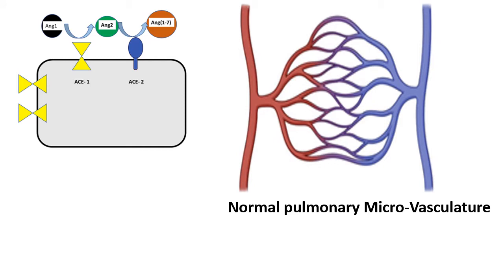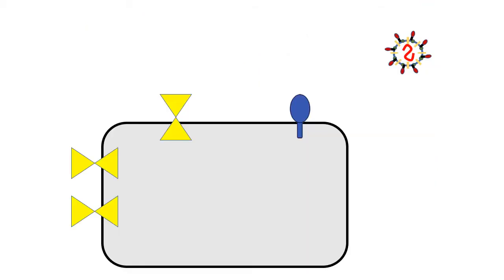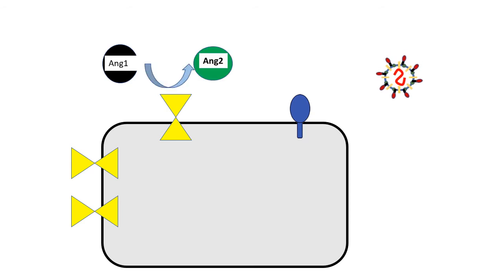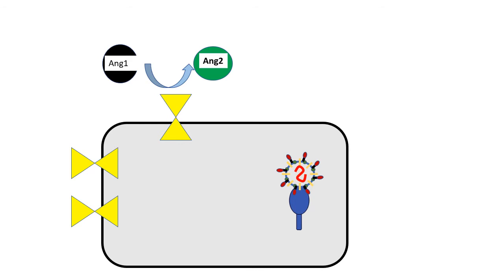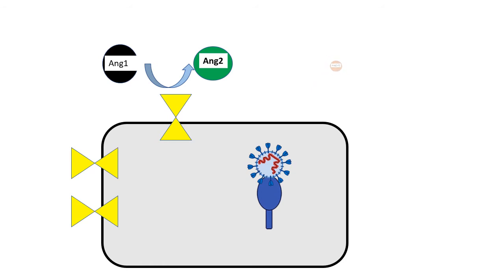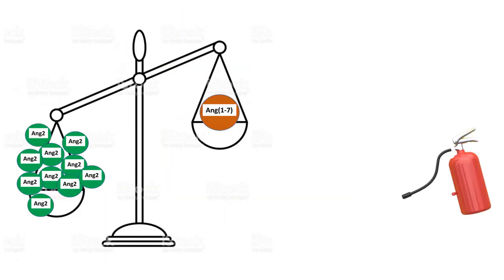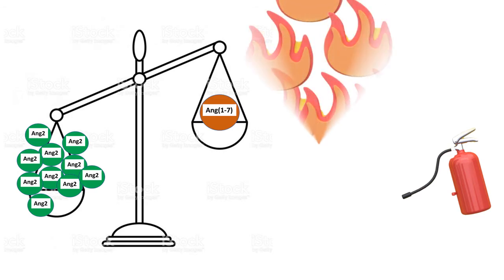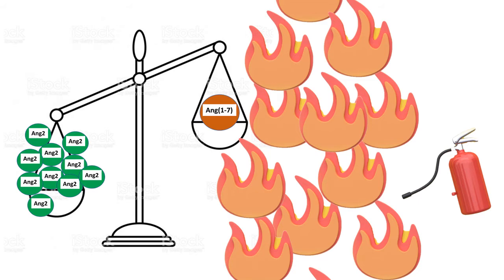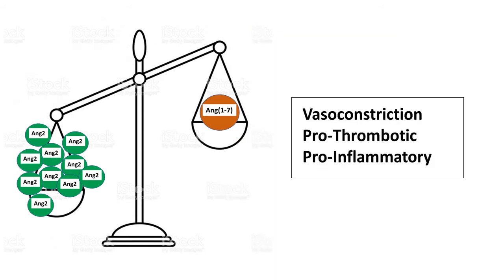So what happens when SARS-CoV-2 comes? Angiotensin-1 is able to change to angiotensin-2, but since the COVID virus is attached to the ACE2 receptors, ACE2 is not present on the cell surface. So you will be having less amount of angiotensin-1,7. On the other hand, the angiotensin-2 level will be increased. The balance is tilted towards the other side — more inflammation and less anti-inflammation. This will lead to excessive vasoconstriction, pro-inflammation, and pro-thrombosis.